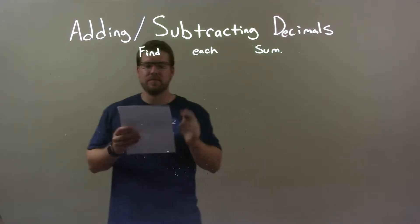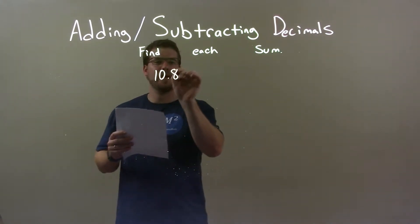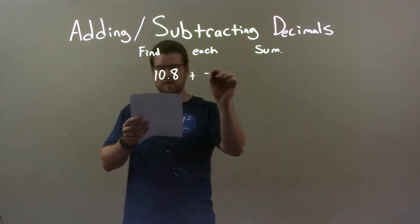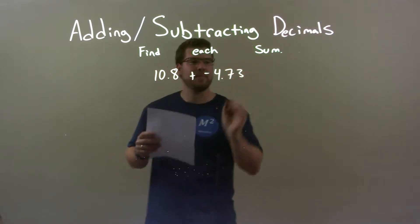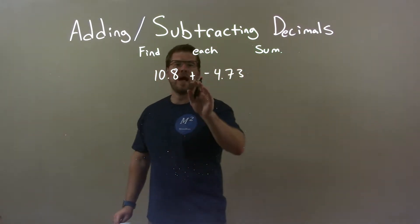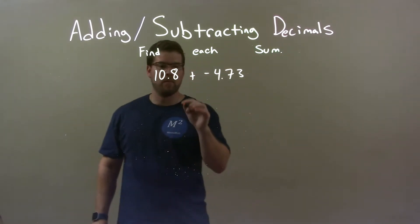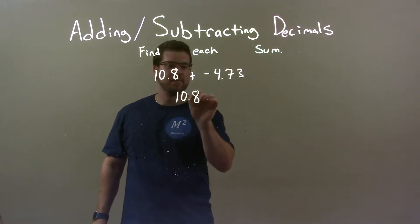So if I was given this: 10.8 plus a negative 4.73. Well, since adding a negative is the same thing as subtraction, I can write the problem like this: 10.8 minus 4.73.